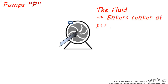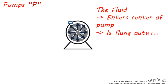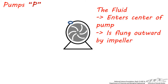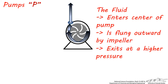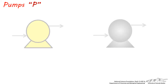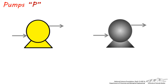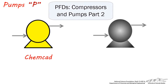The fluid enters the pump in the center, and the impeller blade flings the liquid outward towards the casing. This work being done on the fluid results in an increase in pressure as the fluid leaves the pump. This pressure increase is critical for moving fluids upward or across long lengths of piping from one process unit to another. In terms of pump symbols in simulation software, this pump symbol is what's commonly used in ChemCAD, and this is the symbol used in Aspen.